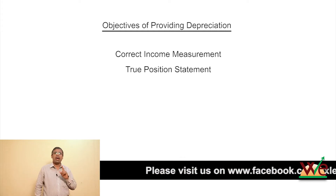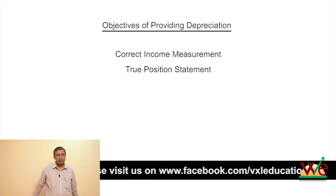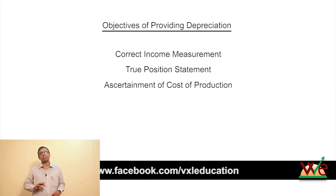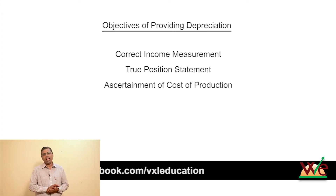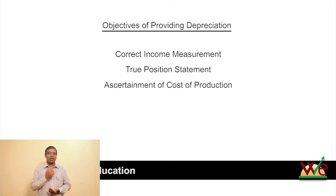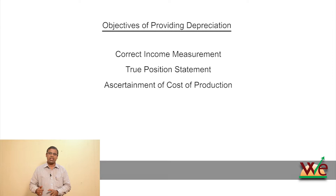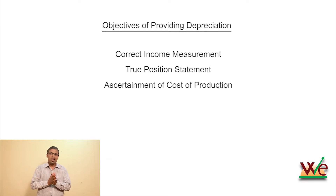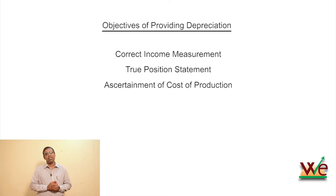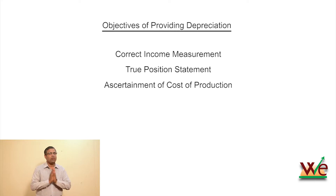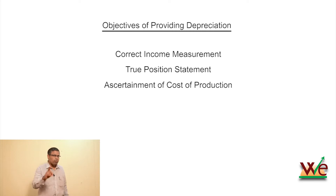The third reason is that depreciation must be included in production costs. If we exclude it, the cost is understated and the profit is overstated. We provide depreciation in order to correctly determine production costs.